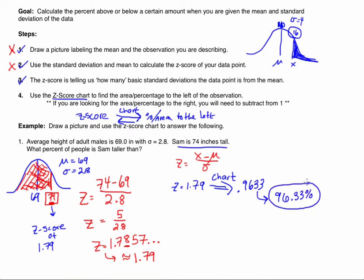So the answer is 96.33%. To recap: I drew the picture knowing the mean, thought about what observation I'm looking for, found the z-score associated with that observation, and used the chart to find the area to the left. Notice — I wanted the area to the left, and the z-score chart always gives you the area to the left. If we were looking for the percent of people who are taller than Sam, we would actually have to consider something else, which we'll see in the next example.